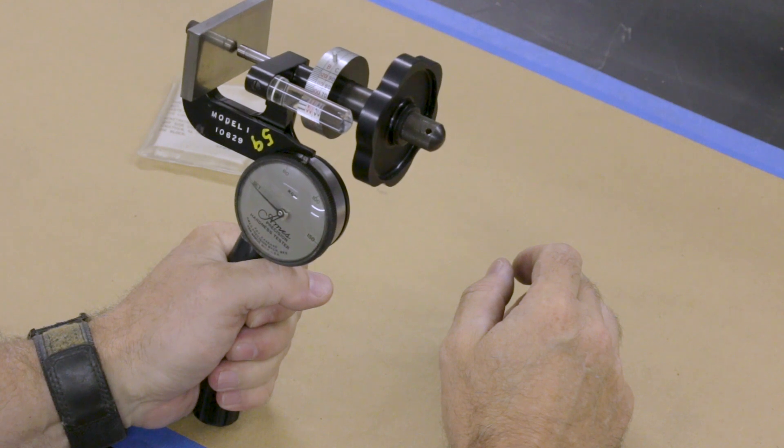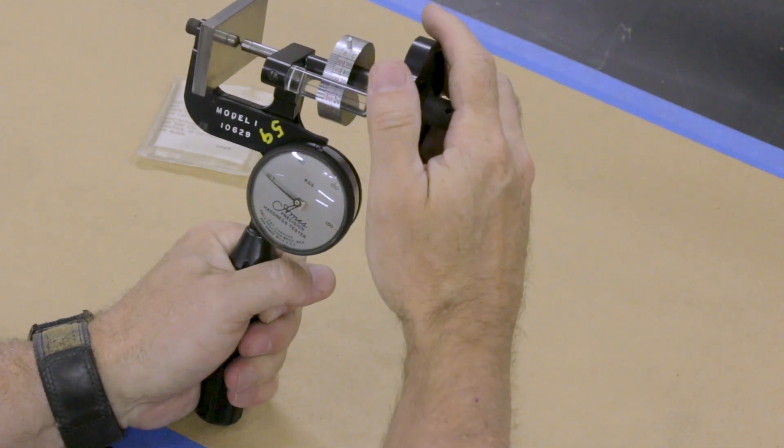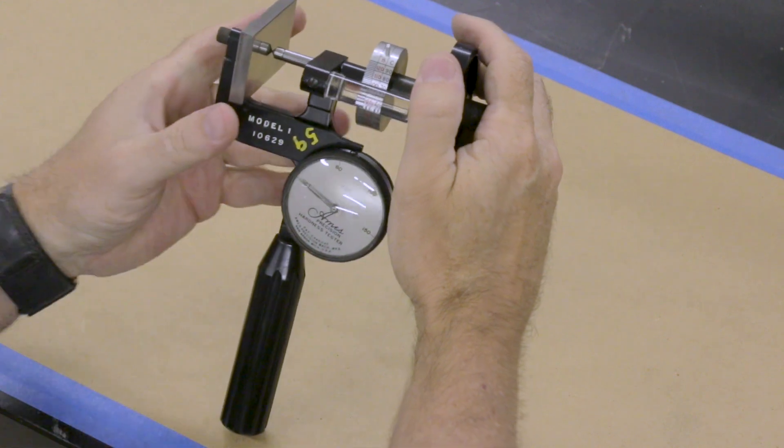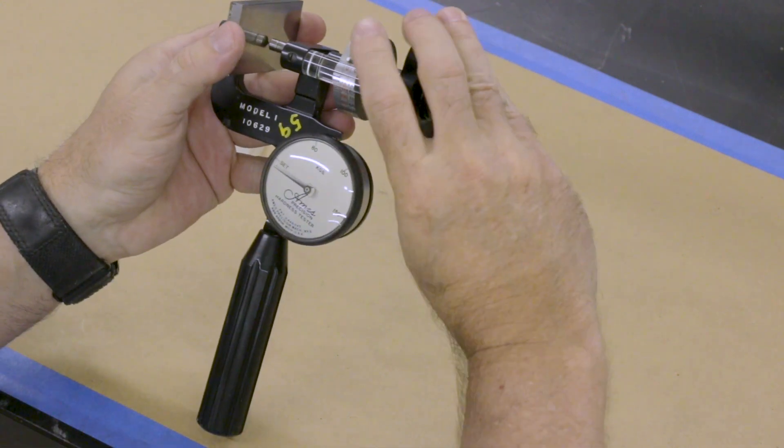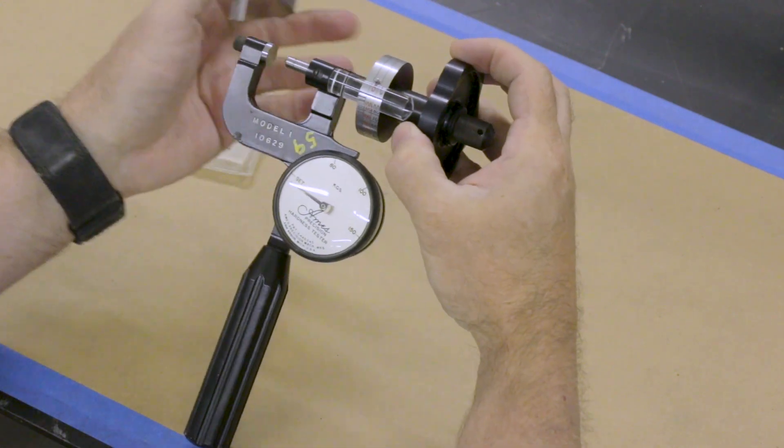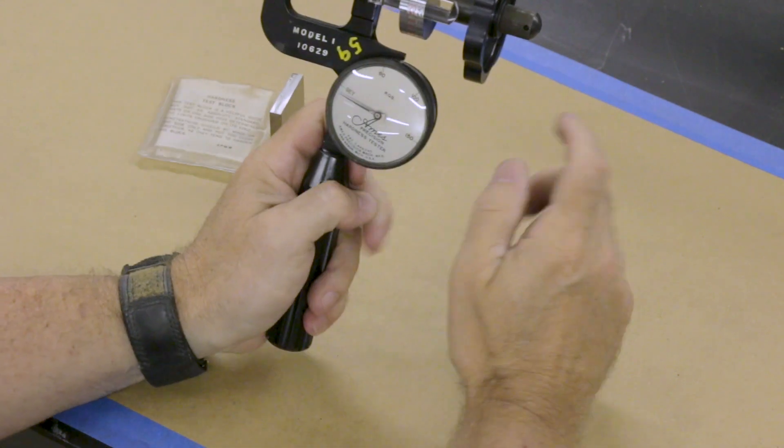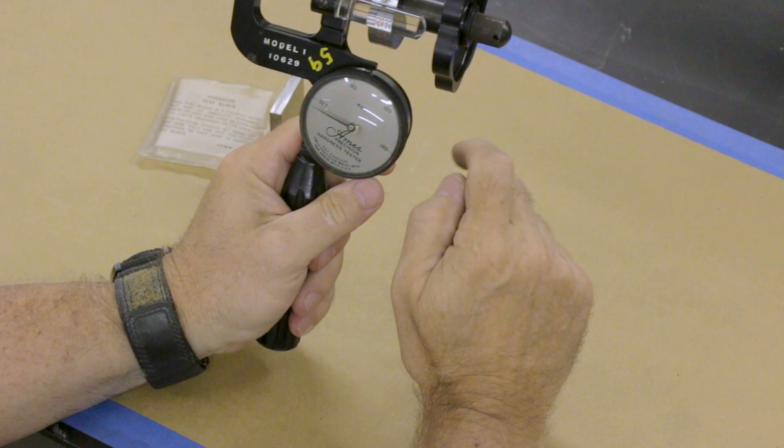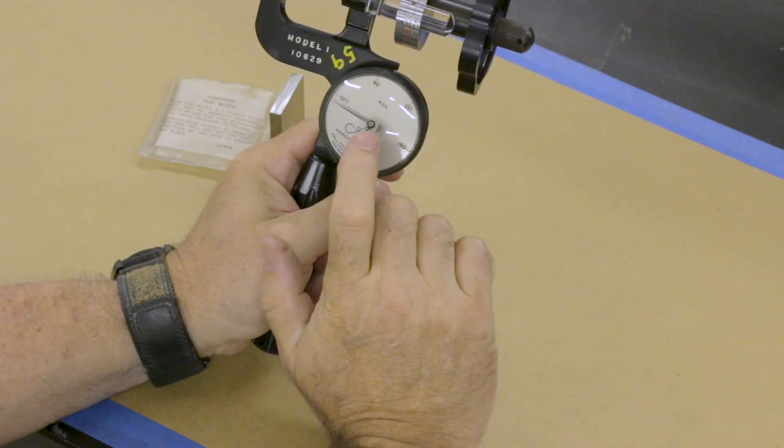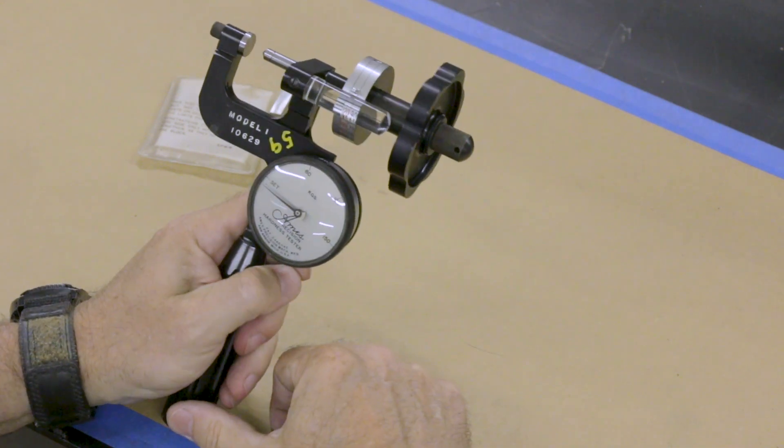And this is reading 62, which I know that I said it says 64 on my block, and that is probably correct. As long as I've owned this, this 64 block has always read 62. And that's just, you know, it's a little bit off.